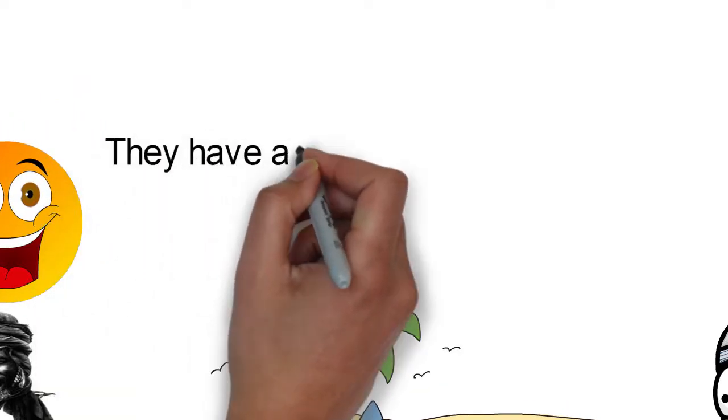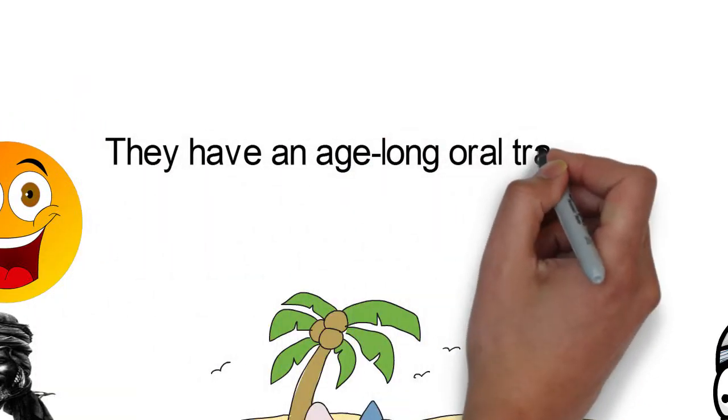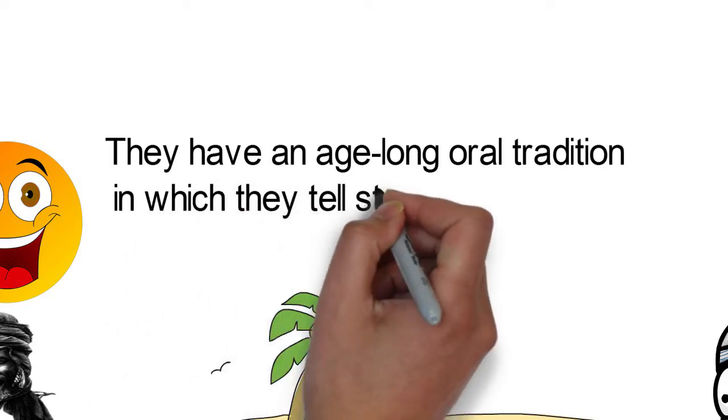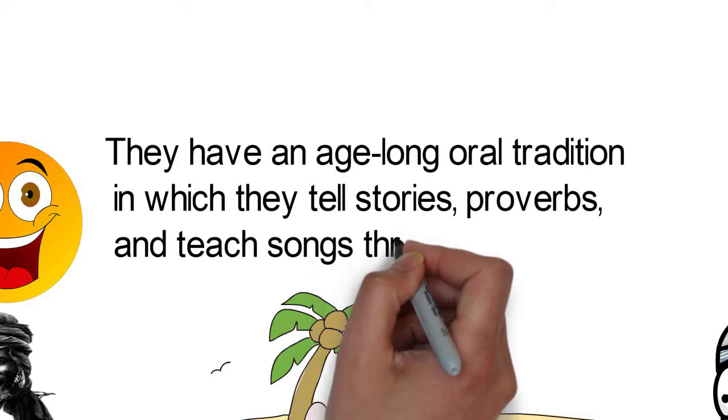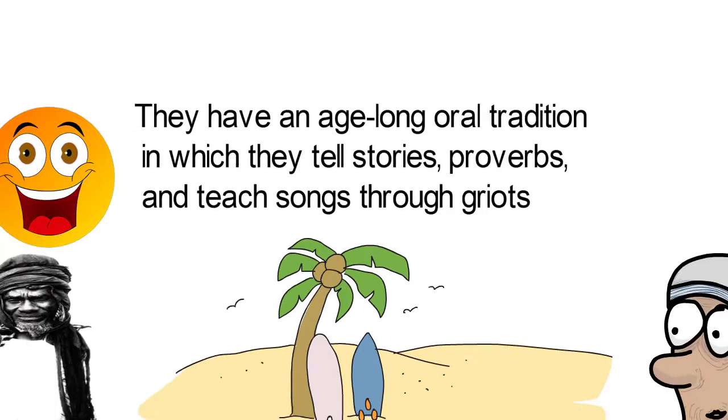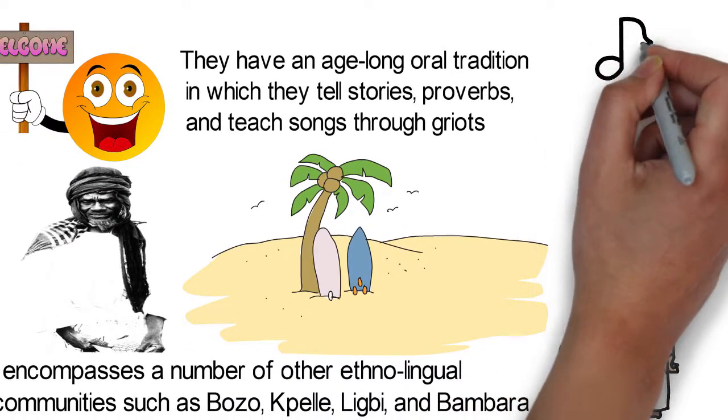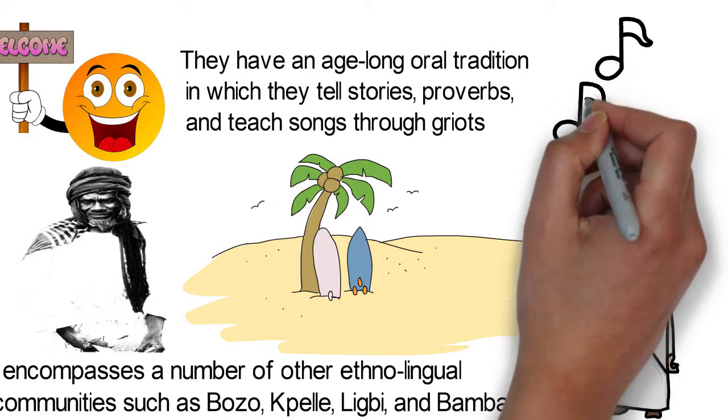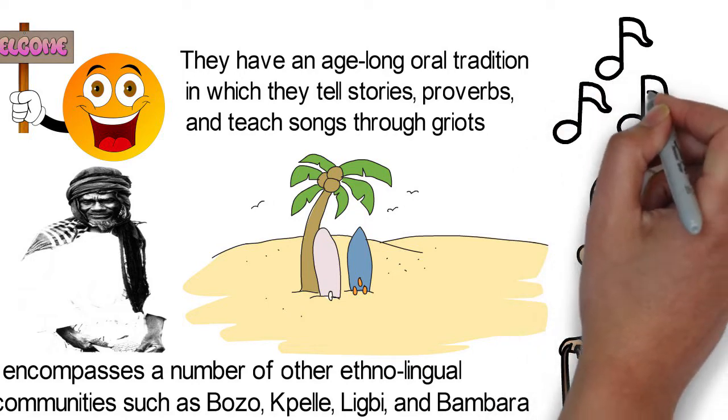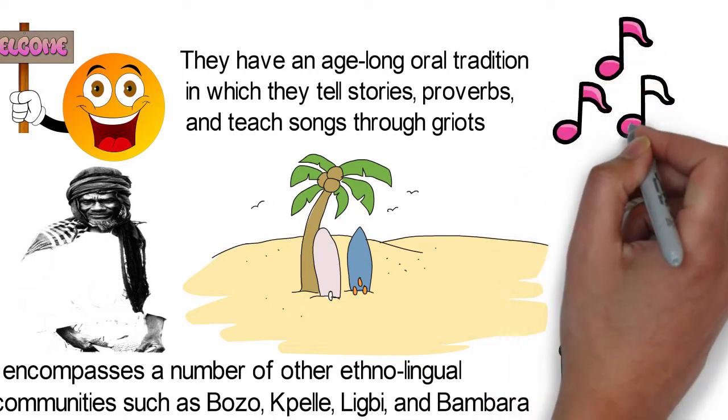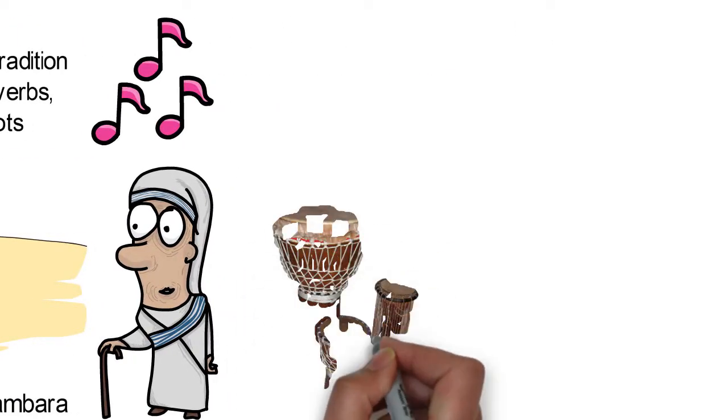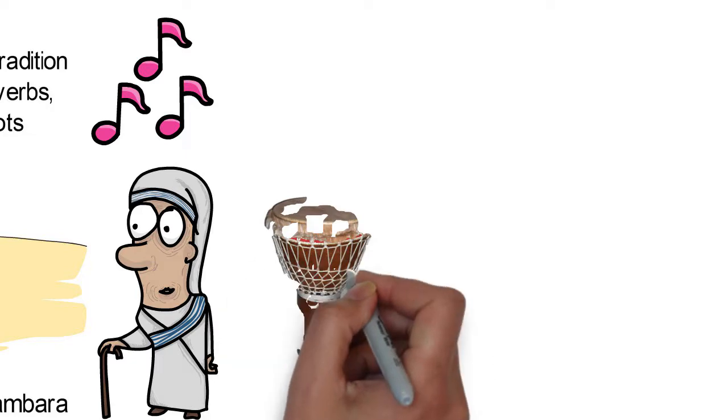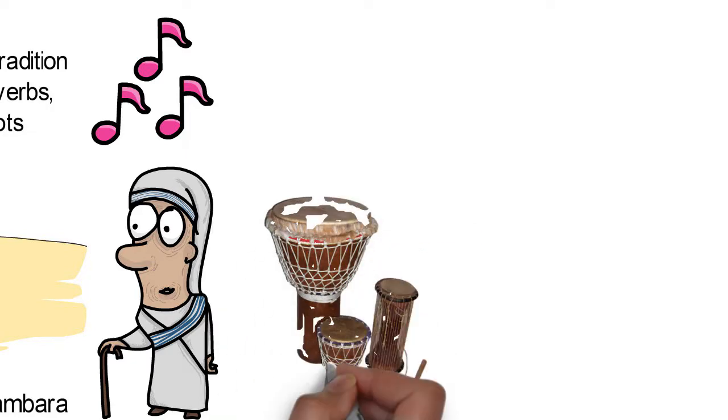The Mandingo culture is rich in ritual and music. They have an age-long oral tradition in which they tell stories, proverbs, and teach songs through griots. They particularly pass down oral history through music, and this has made music one of the most distinctive components of their culture. The Mandingo are popular for their drumming and cora, their unique musical instrument.